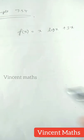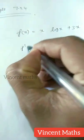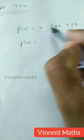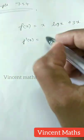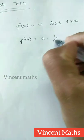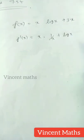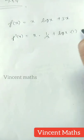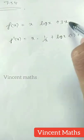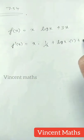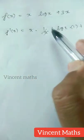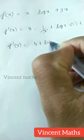The first thing we can do is find f dash of x. When we differentiate f of x, we apply the product rule. The derivative of x into log x gives log x plus 1, and the derivative of 3x gives 3. So we cancel and combine: 1 plus 3 equals 4, and f dash of x equals 4 plus log x.